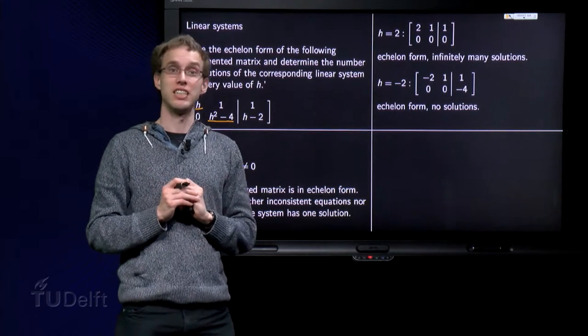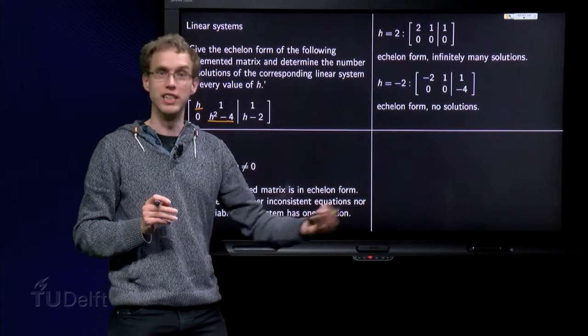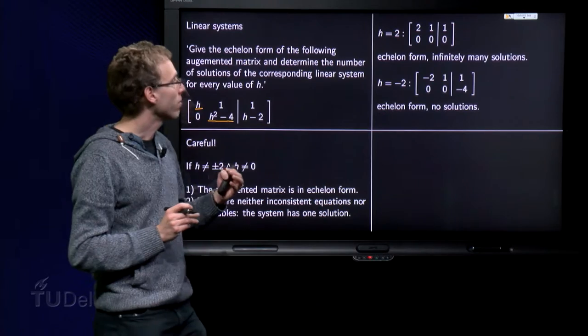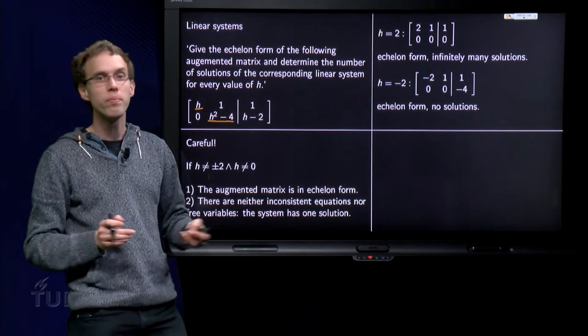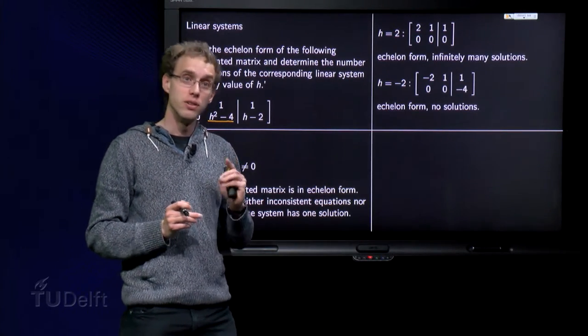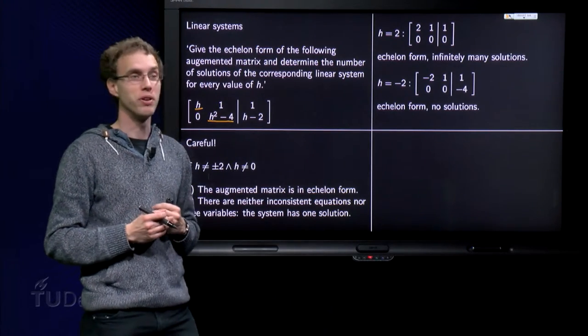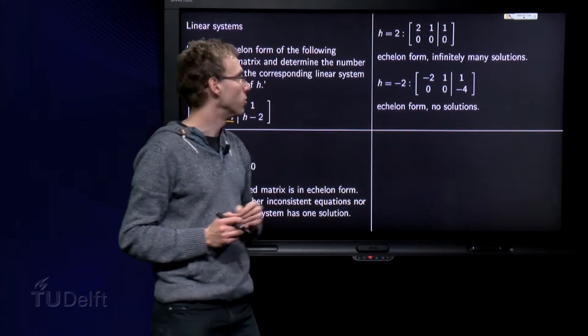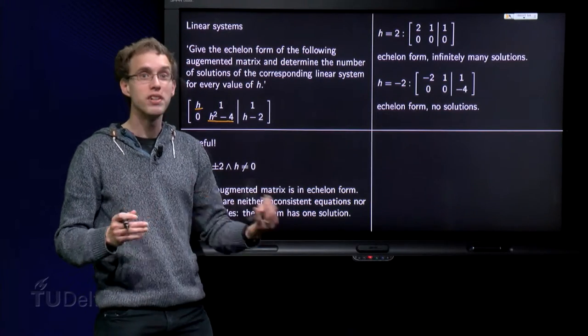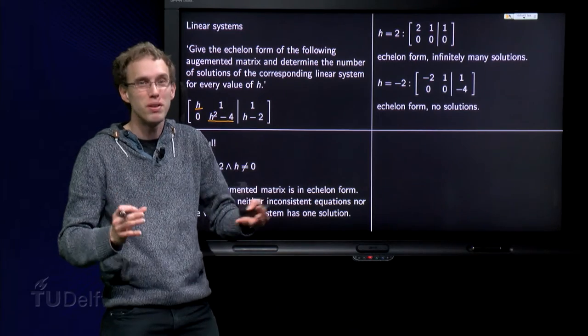Ok, this is still an echelon form, also for h equals 2. However, we have gotten a row with zeros, ok, no problem, but no inconsistencies. We do have a free variable now. So for h equals 2, you see that we have infinitely many solutions, because we basically lost a pivot.